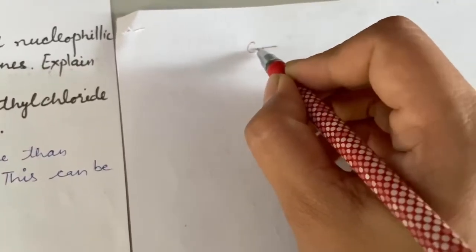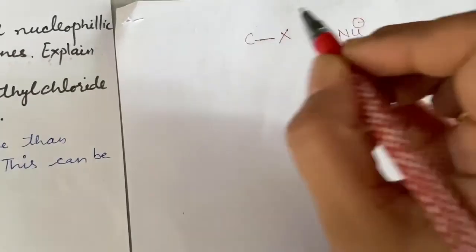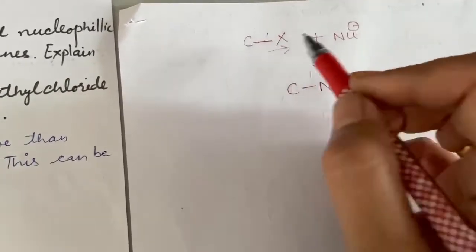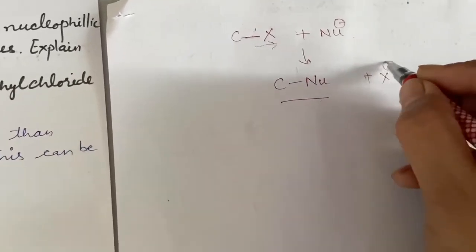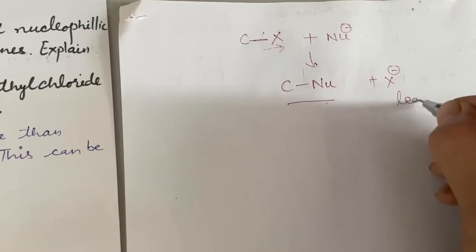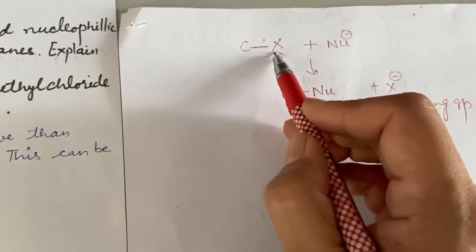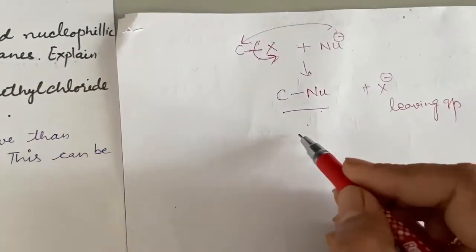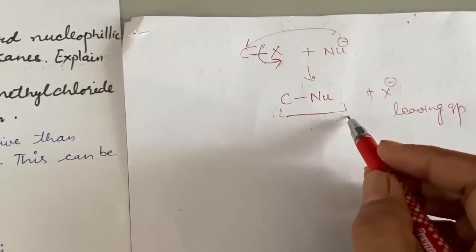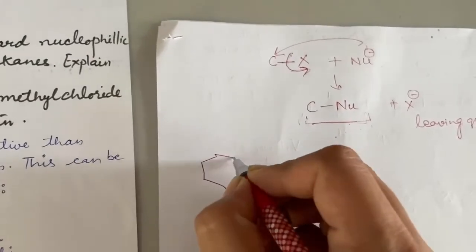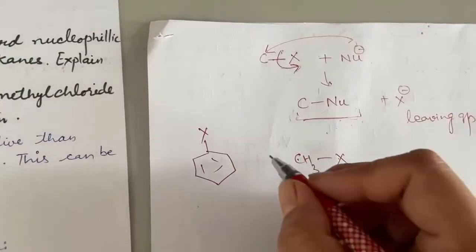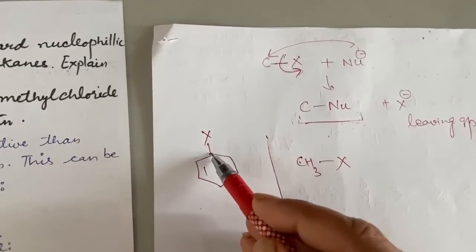For nucleophilic substitution, we replace the carbon-halogen bond with a carbon-nucleophile bond. We remove the halogen and put the nucleophile in its place, and the halogen leaves with its lone pair — this is called the leaving group. So the faster the carbon-halogen bond breaks, the faster the nucleophile attaches to the carbon, and the faster our nucleophilic substitution product forms. Now we need to see whether the carbon-halogen bond in haloarenes or in alkyl halides breaks faster. The bond dissociation of the C-X bond in case of haloarenes depends on three main factors.